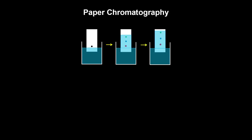The components of a liquid solution cannot be separated using filtration, but they can be separated using chromatography, which takes advantage of the differences in intermolecular interactions of the components of the substance. In paper chromatography, you have a solvent which can be polar like water or non-polar, and a paper with the substance that we're going to separate, which is the stationary phase.